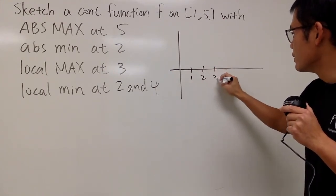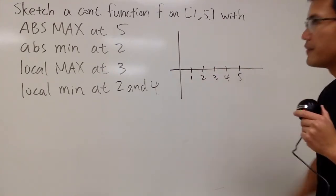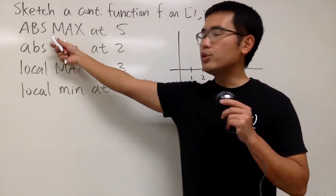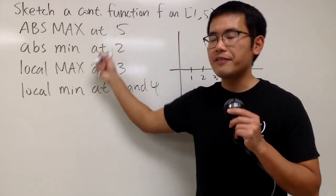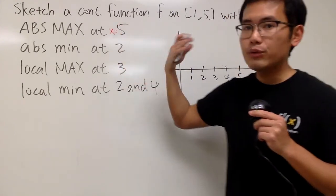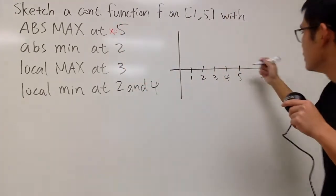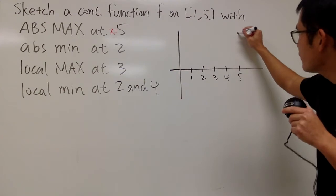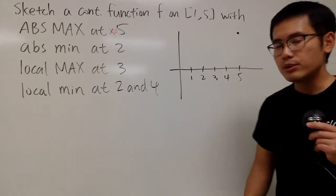So let's say this is 1, 2, 3, 4, 5. Well, it says we need to have the absolute maximum at 5. This means when x is 5, we have to have the highest y value. So I'll just go maybe up right here. This is going to be my absolute maximum.